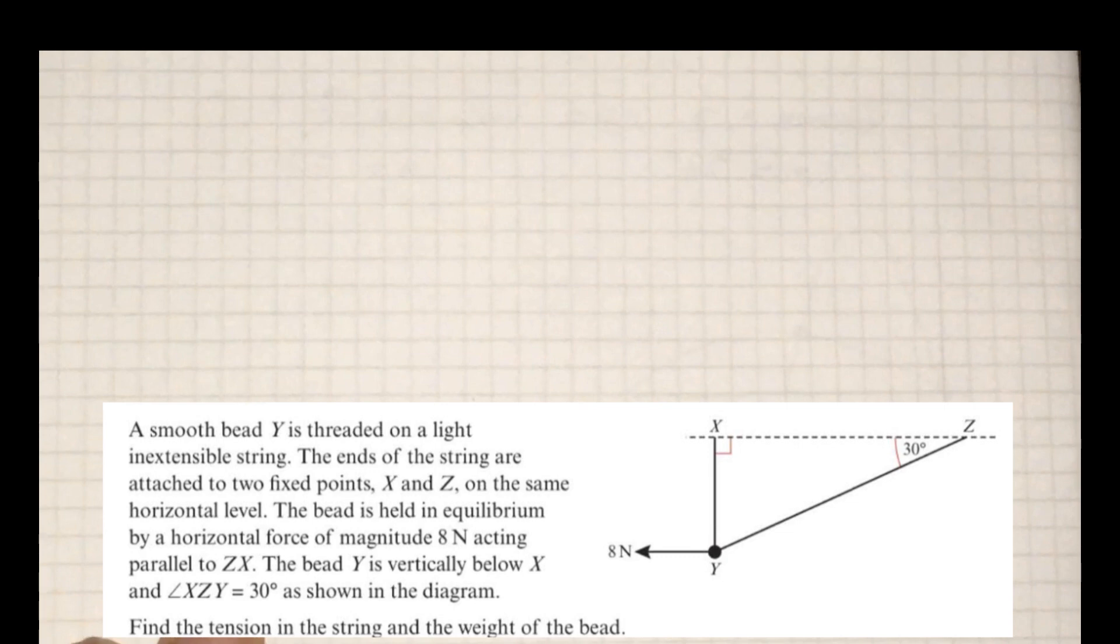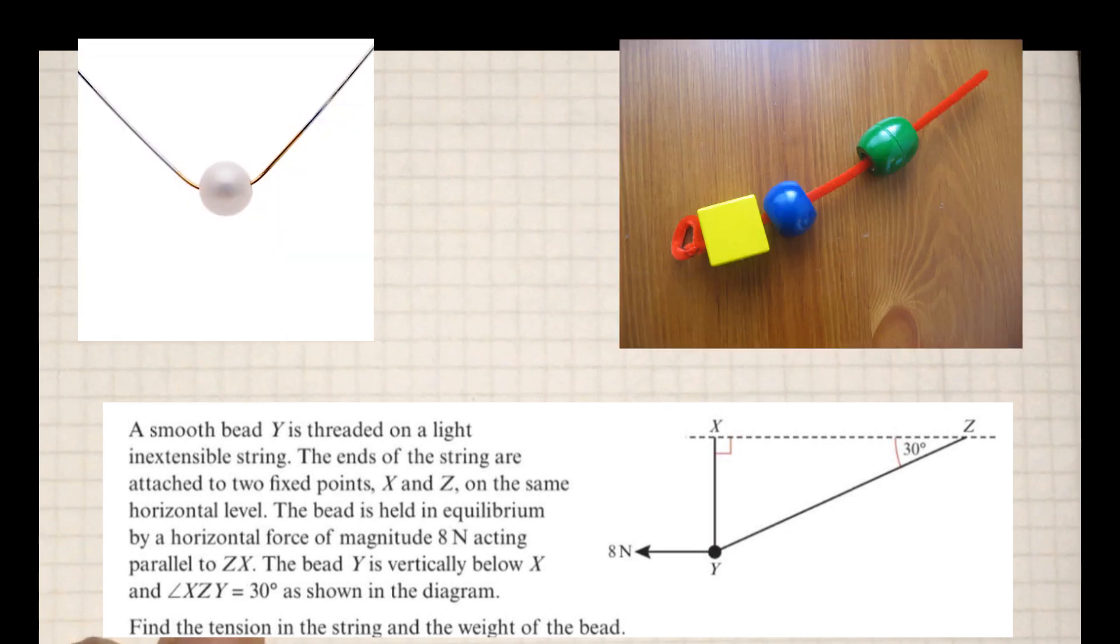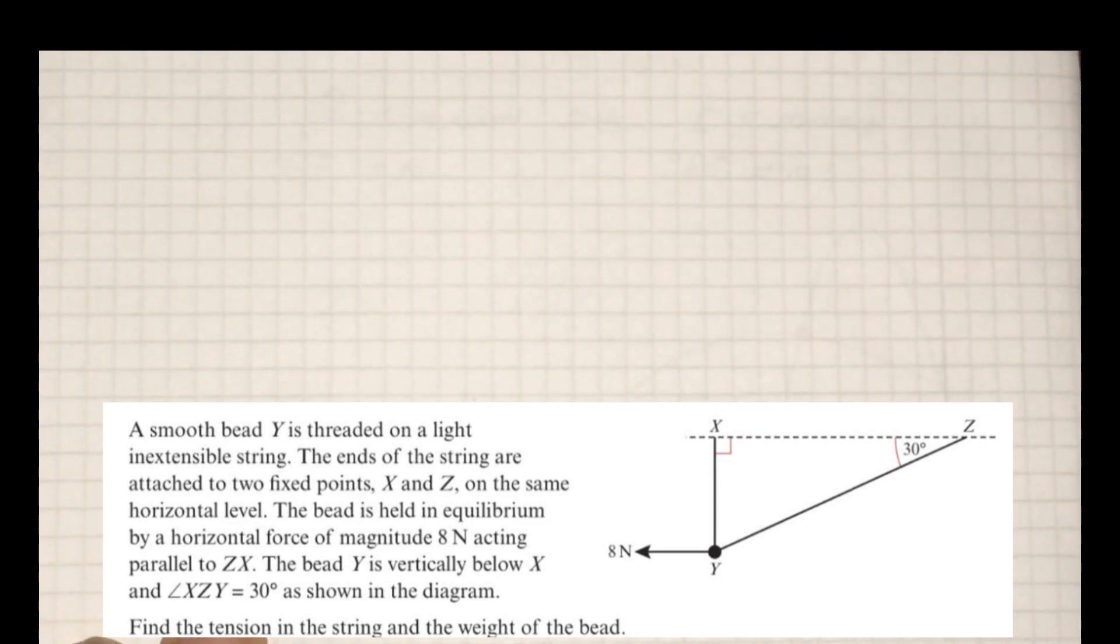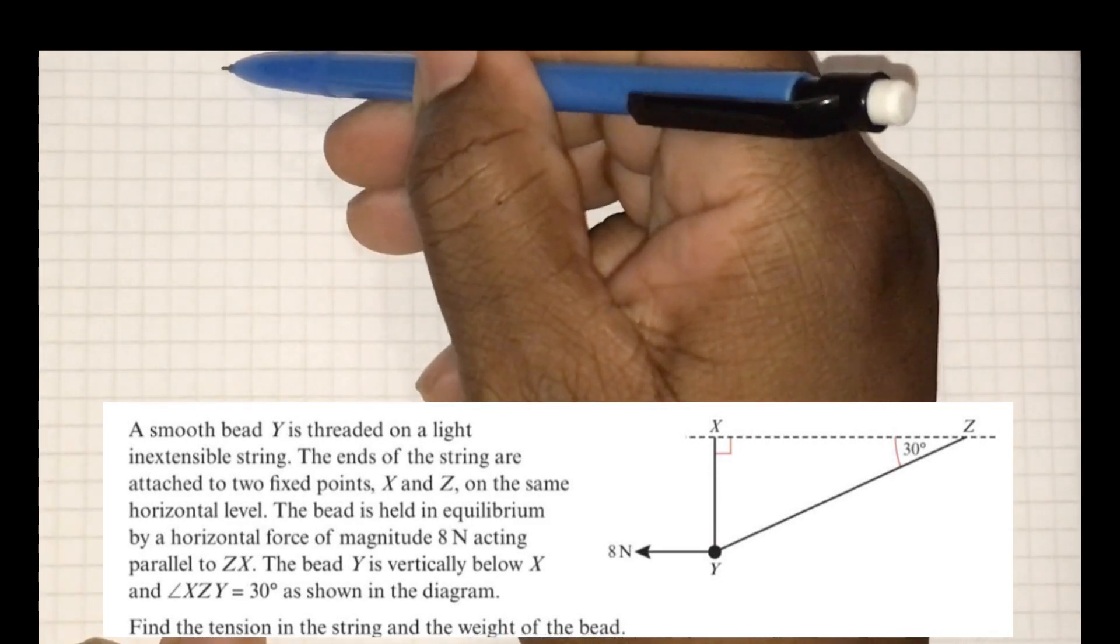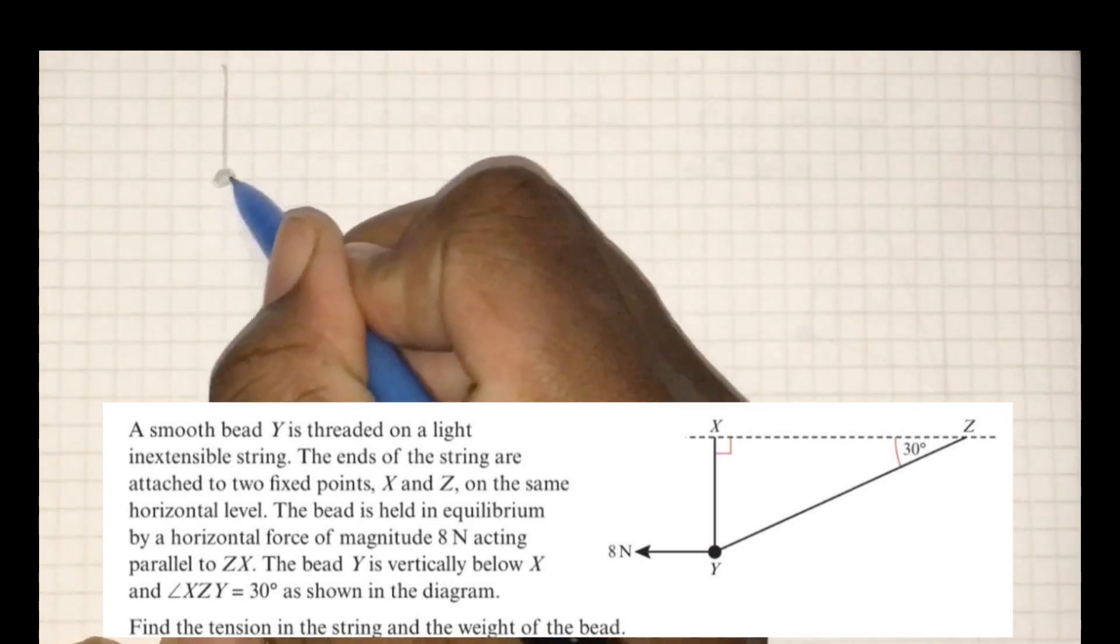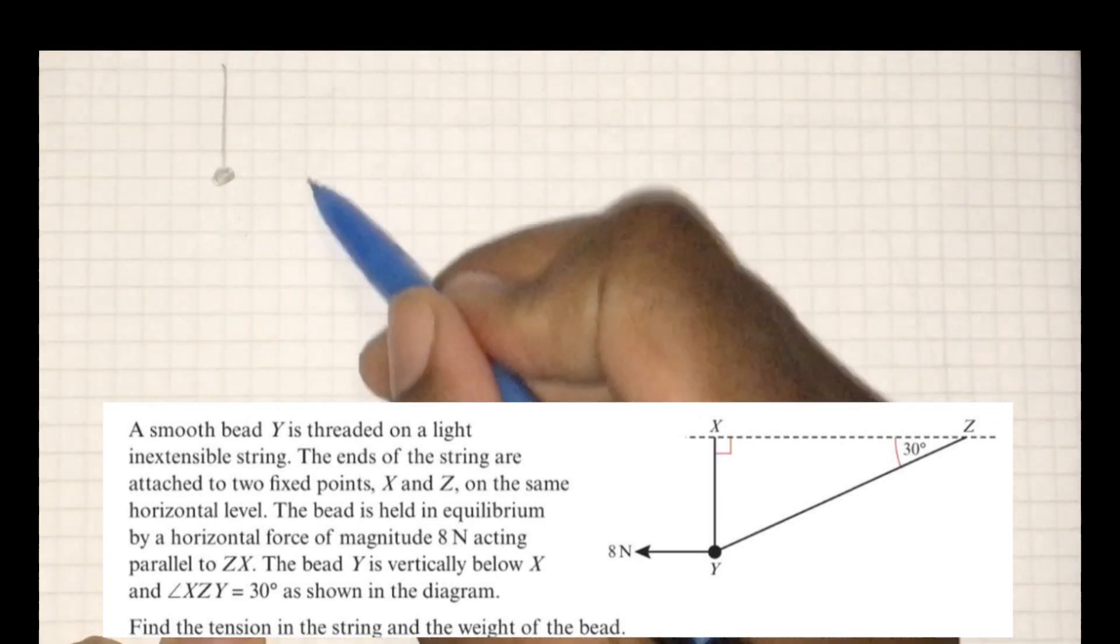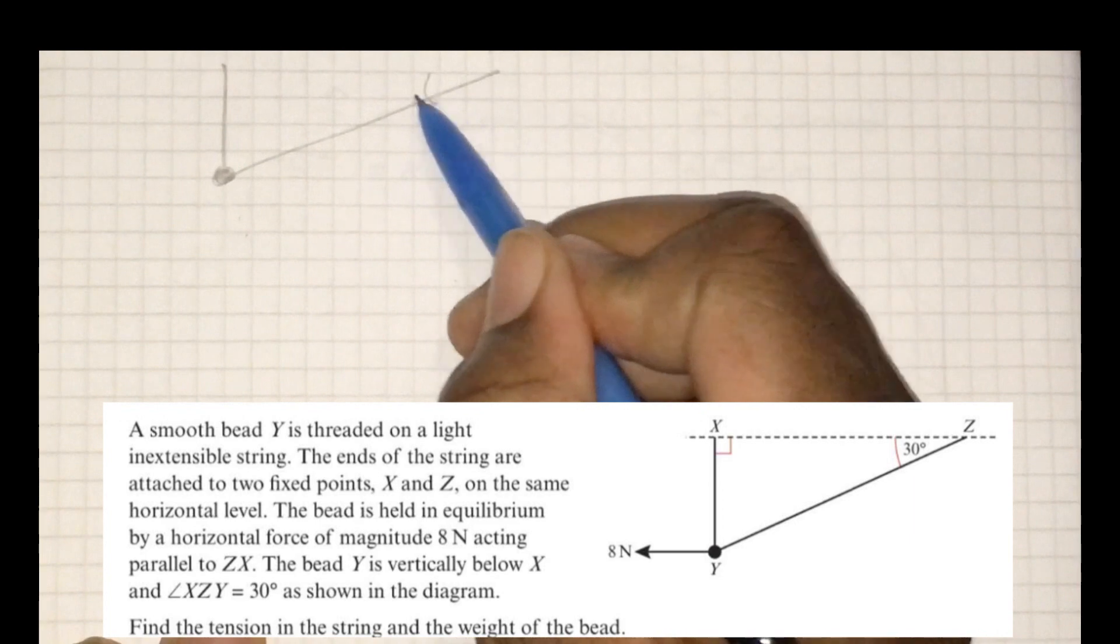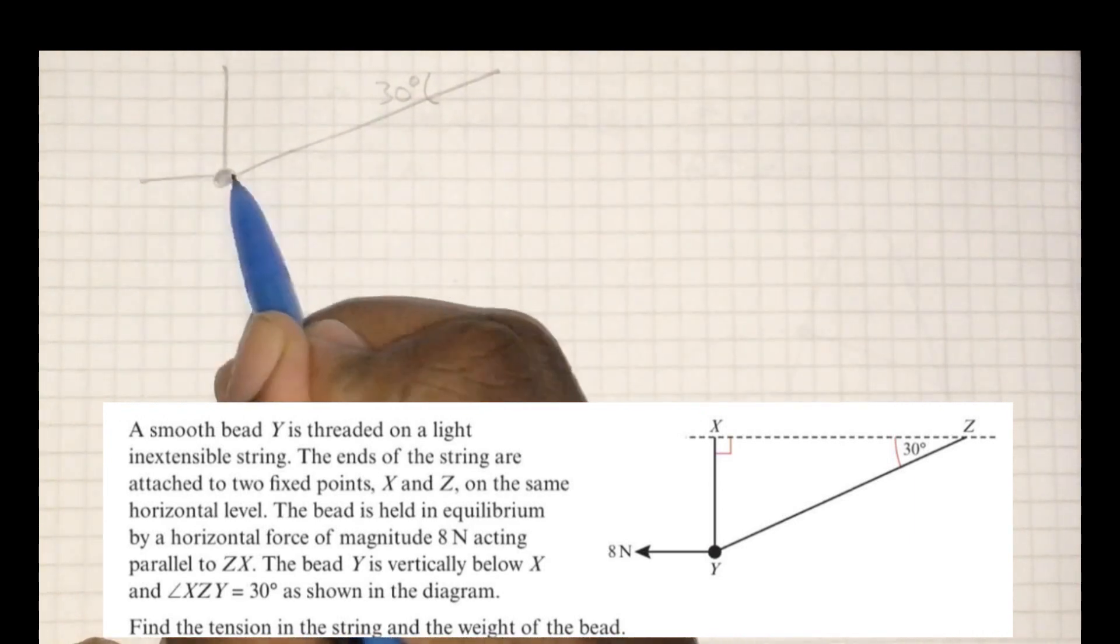So a bead is just an object you'd usually find on a bracelet or a necklace - a small decorative object that has a hole drilled through it so that we can thread a string or wire or something through it. The main consideration or the main assumption that we're going to make is the fact that it's smooth and the fact that it's a continuous piece of string going through it.